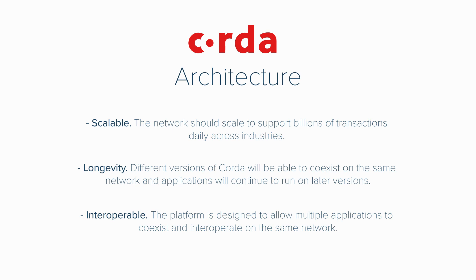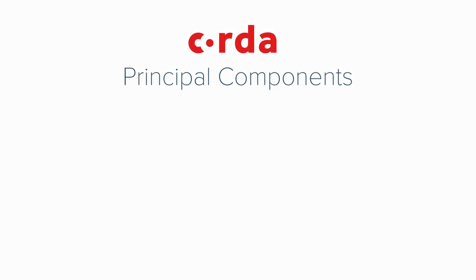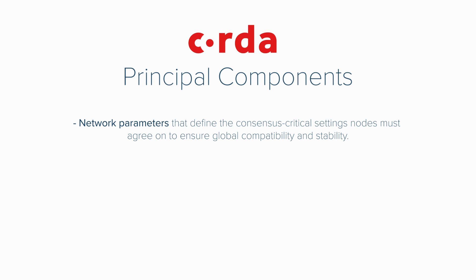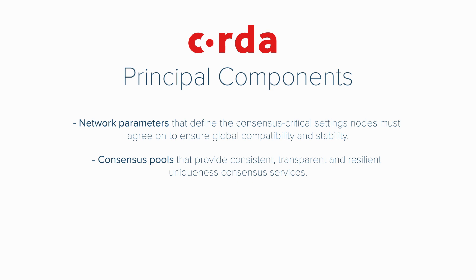The last thing I want to look at is what Corda calls the global Corda network's principal components. The global Corda network specifies network parameters that define the consensus-critical settings nodes must agree on to ensure global compatibility and stability. Consensus mechanisms are standardized plug-and-play mechanisms like, for example, the Byzantine Fault Tolerance or BFT algorithm, which keeps independent development of Corda apps compatible on the global network. The global Corda network uses consensus pools that provide consistent, transparent, and resilient uniqueness consensus services — basically, consensus pools are here to prevent double spending.